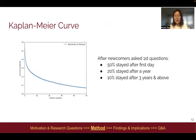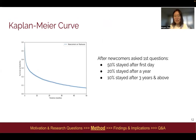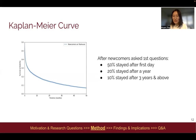We drew the Kaplan-Meier curve, which tells us that after newcomers ask their first questions on the Tea House, 50% of them stayed after the first day, 20% stayed after a year, and 10% stayed after three years and beyond.